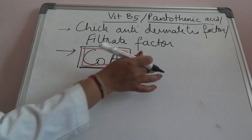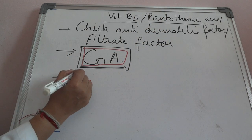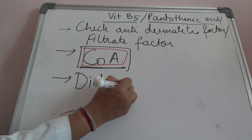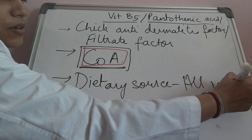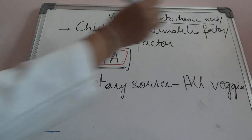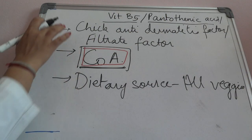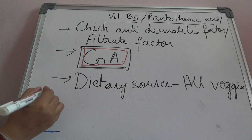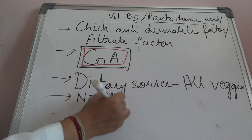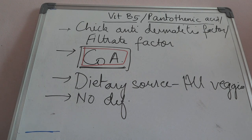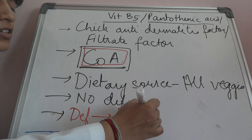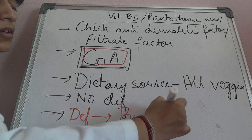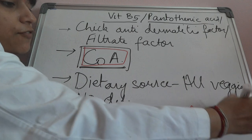Regarding dietary sources, there is no major dietary source to specifically learn because vitamin B5 is present in all vegetables. Therefore, there is generally no deficiency of pantothenic acid. If at all a deficiency of vitamin B5 is seen, it leads to a syndrome called burning foot syndrome.